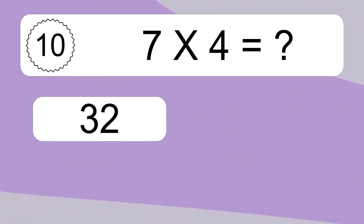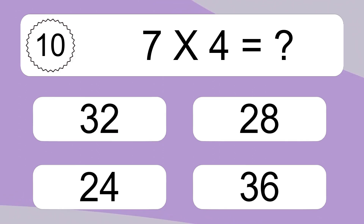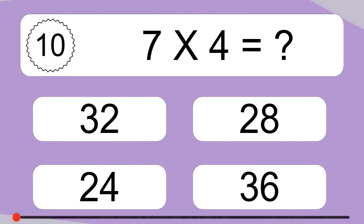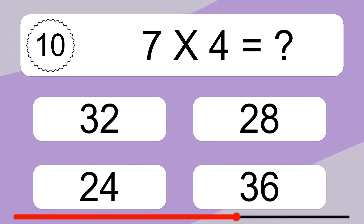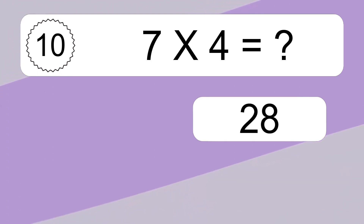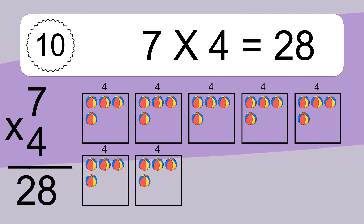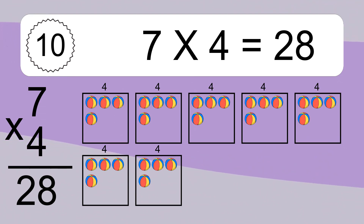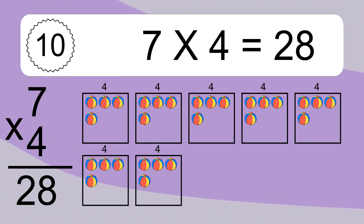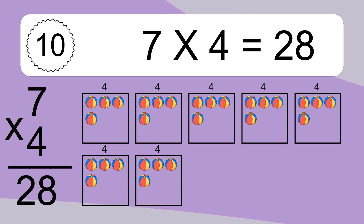7 times 4 equals what? 7 times 4 equals 28. We have 7 boxes, and each box has 4 colorful balls inside. If you count all the balls in all the boxes together, you will have 7 times 4 balls. This equals 28 balls.